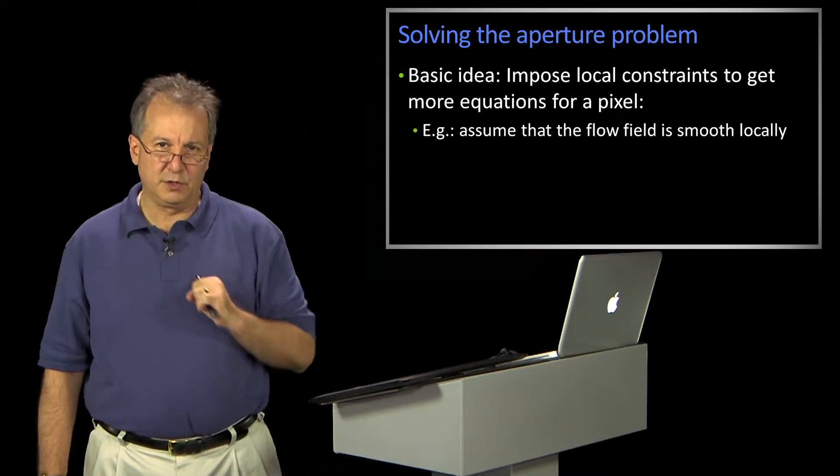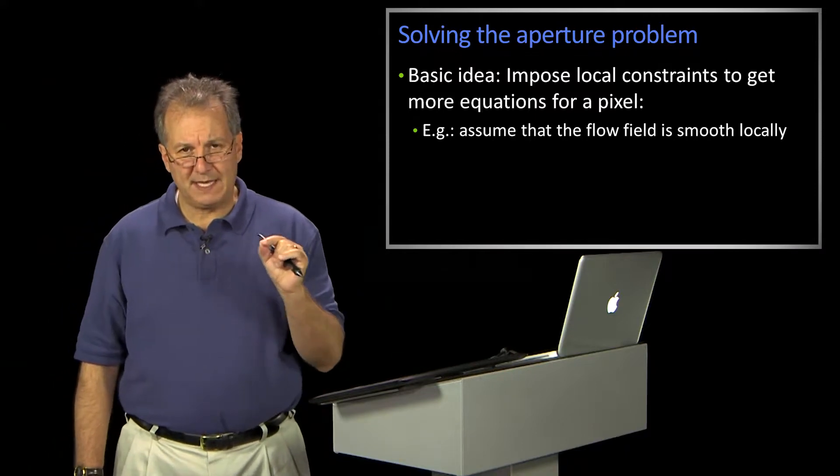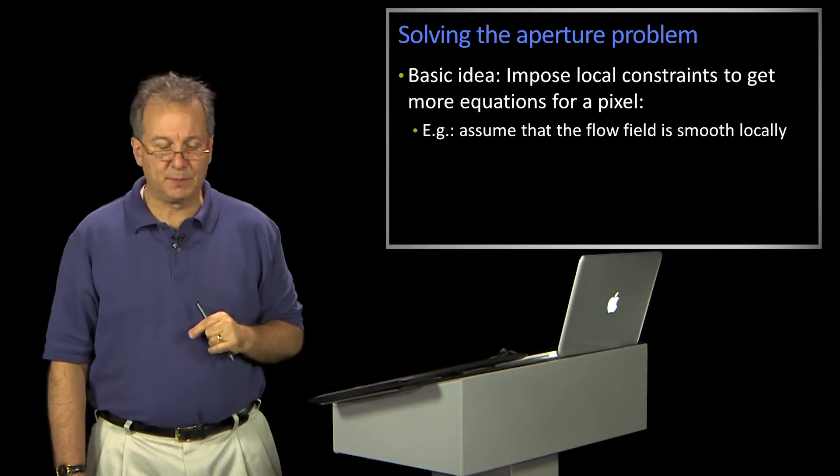The aperture problem was if you look at a little local area, you can only tell the motion that is in the direction of the gradient perpendicular to the edge.